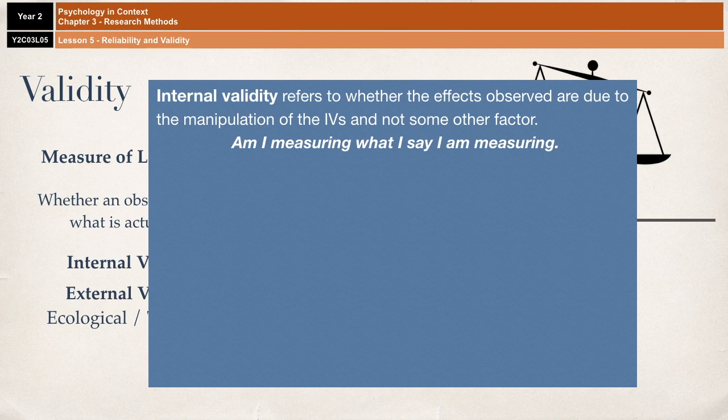Demand characteristics are a massive impact on internal validity. For example, in Milgram's study, some participants' thoughts suggested they didn't really believe that the electric shocks were real, and they were just doing what they thought they were supposed to do. So at that point, you're not actually measuring obedience anymore.